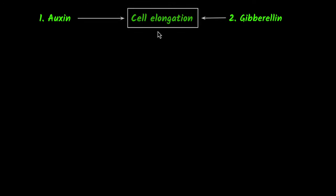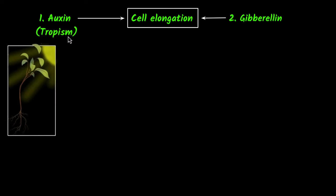Their main function is in cell elongation, making the cell bigger and elongated. But auxin is mostly useful in tropism.